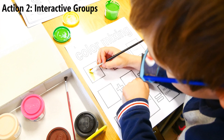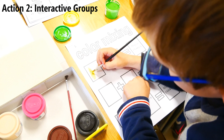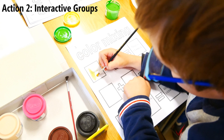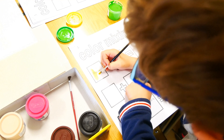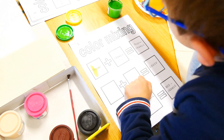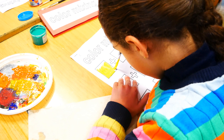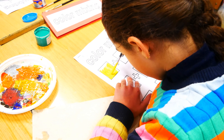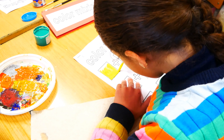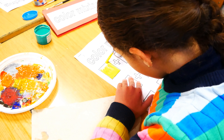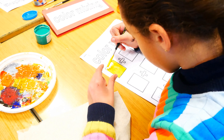Interactive groups are a form of classroom organization that so far has generated the best results. It consists of grouping all the students in the class into four or five small groups, which are as heterogeneous as possible with respect to level of learning, gender, language, motivation and cultural origin.